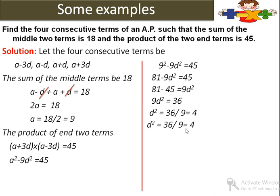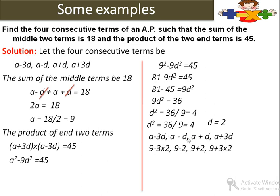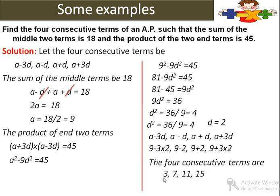हमारे पास a equals 9 और d equals 2 मिल गई. अब four terms में values put करें: a minus 3d = 9 minus 6 = 3; a minus d = 9 minus 2 = 7; a plus d = 9 plus 2 = 11; a plus 3d = 9 plus 6 = 15. इस तरह से हमें 4 consecutive terms मिली: 3, 7, 11, 15. Suppose करते समय हमें यही suppose करना है.